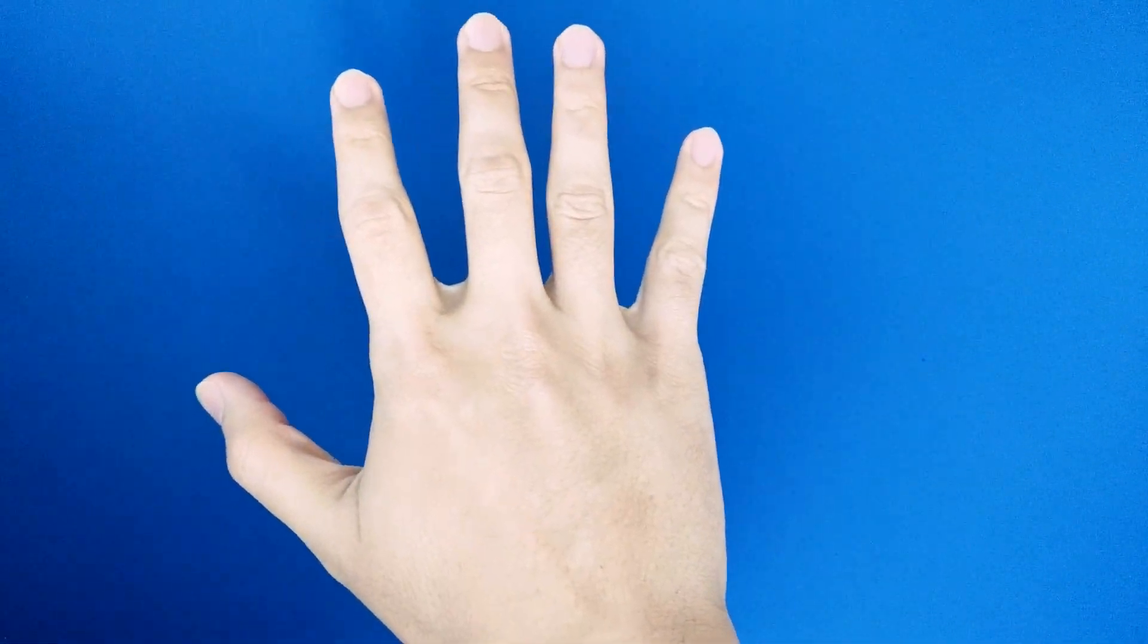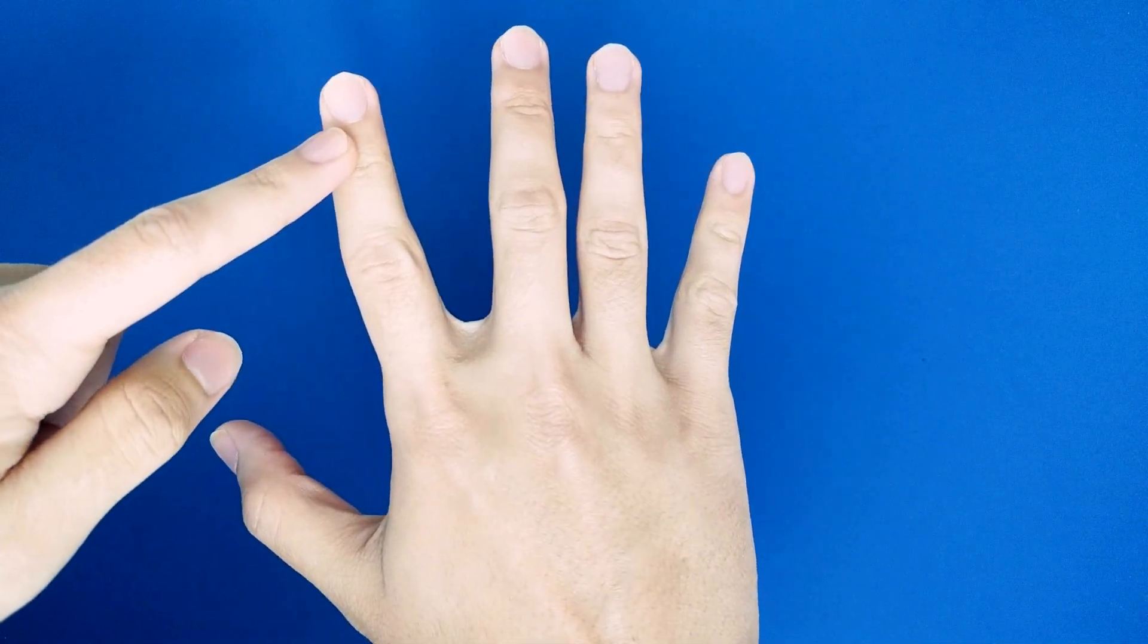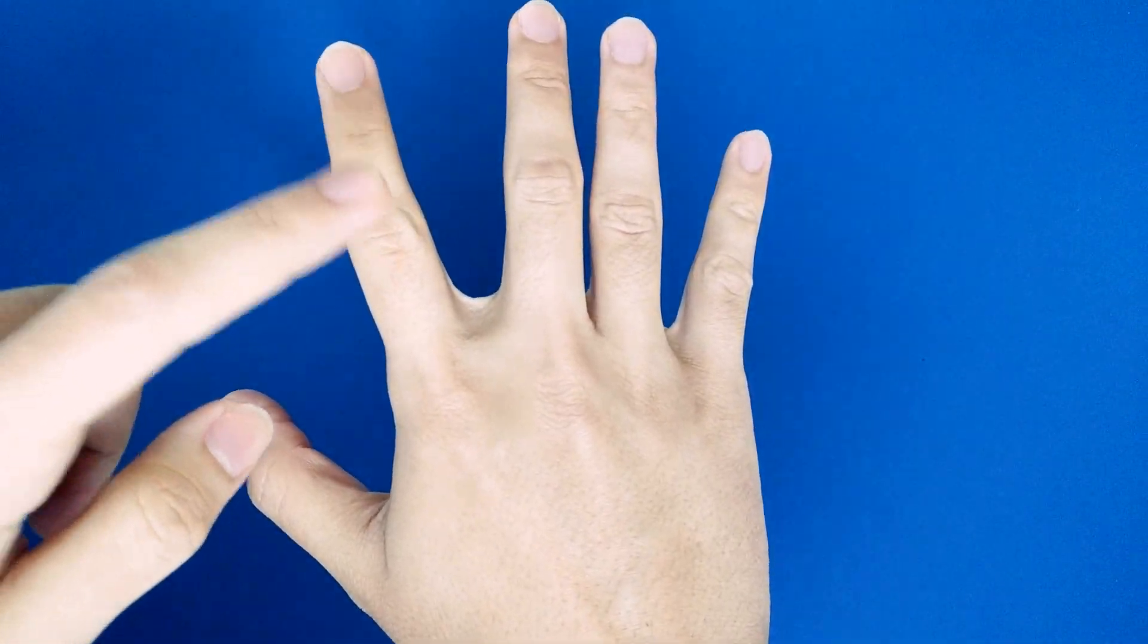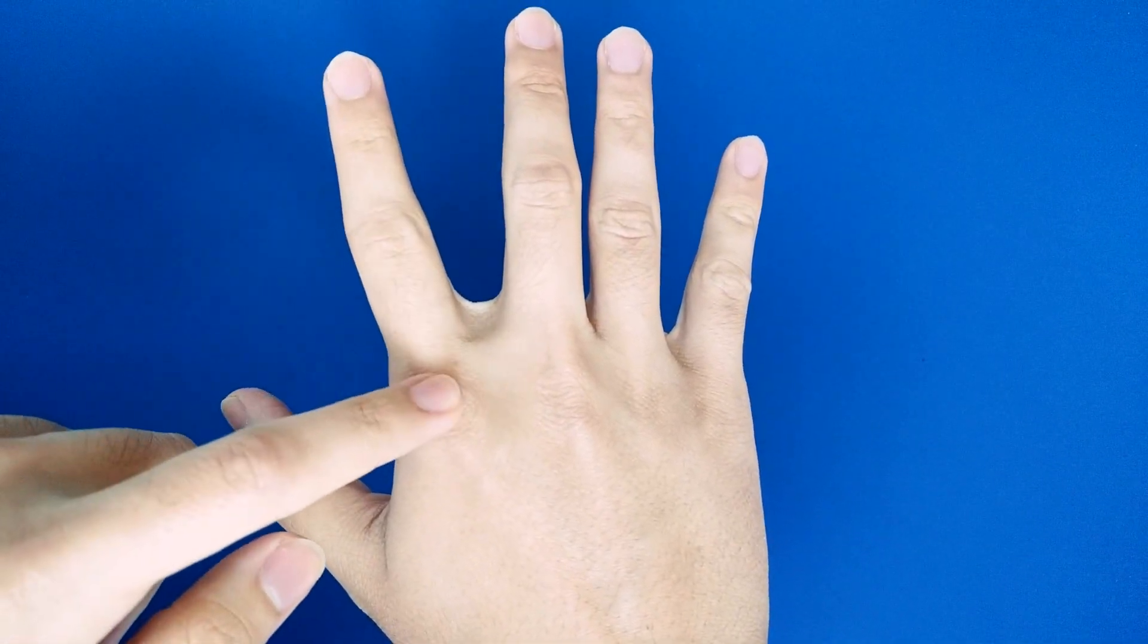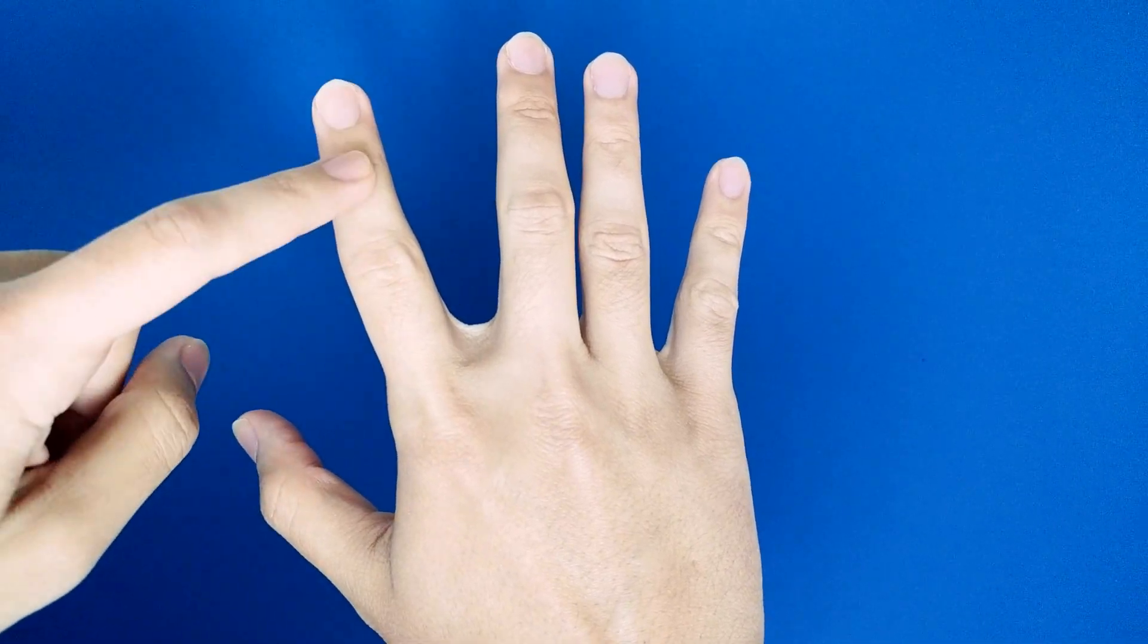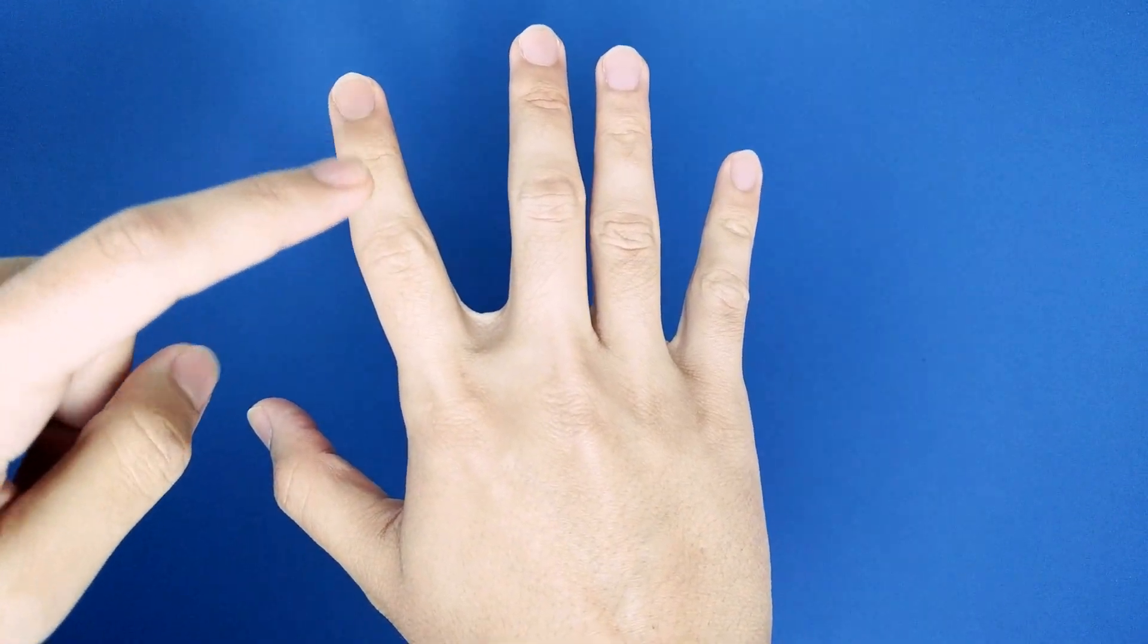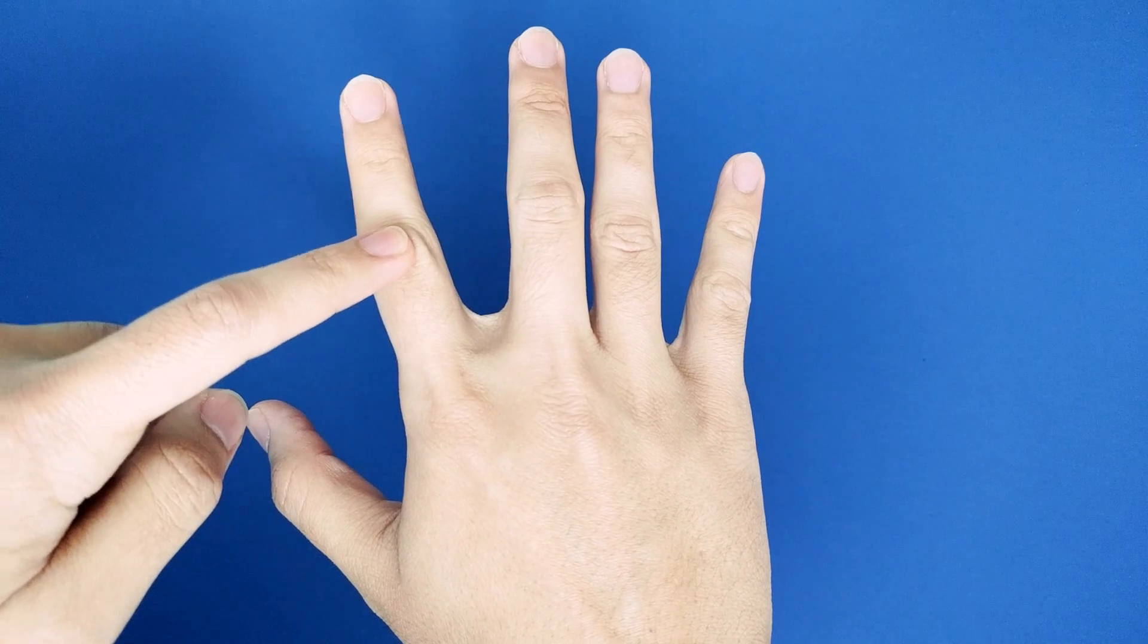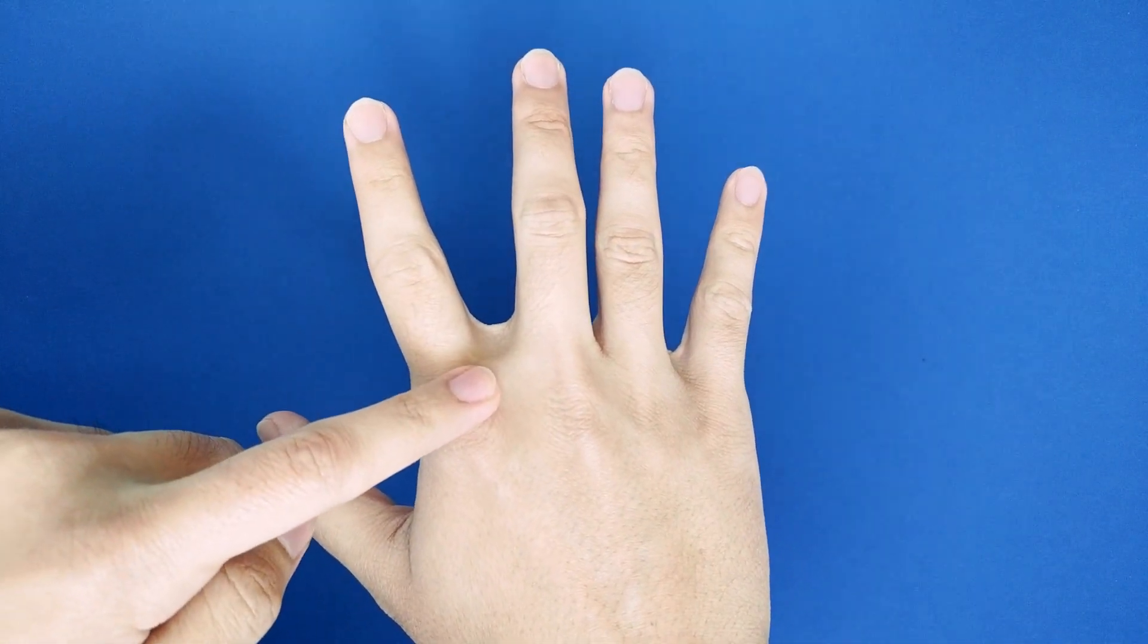here on my hand is the DIP, the PIP, and the MCP. So that's the distal interphalangeal joint, the proximal interphalangeal joint, and the metacarpophalangeal joint.